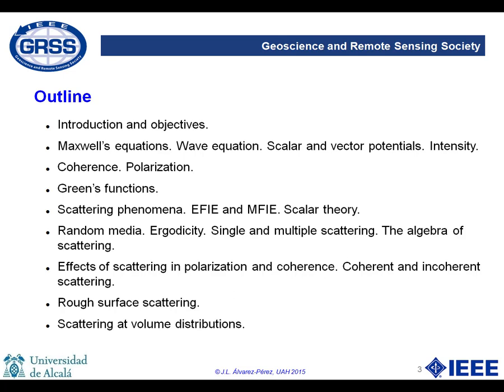We will also speak about Green's functions, especially their application to electromagnetic scattering, in particular inside the integral equations for the electric and magnetic fields. We will also comment on what I call the algebra of scattering — the role of vector and matrix analysis via objects such as the Stokes vector, the Mueller matrices, and the coherence and covariance matrices. Finally, we will investigate in a comprehensive but succinct way the most widely used electromagnetic models for the two typical scenarios in remote sensing: rough surfaces such as bare ground or the ocean, and volume distributions of scatterers, relevant for vegetation canopies or penetrable and stratified soils.